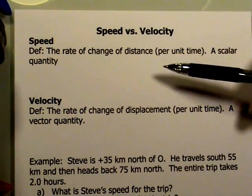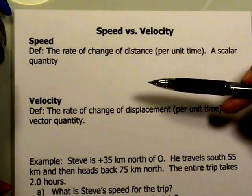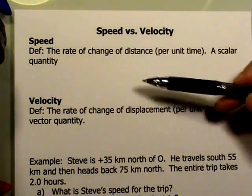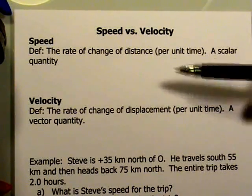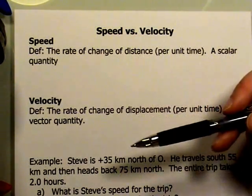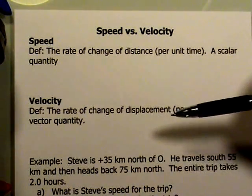When we think about the motion, we're typically going to be referring to either the speed or the velocity of the object. And in the way that distance and displacement were related to each other, speed and velocity are related to each other through those definitions of distance and displacement.